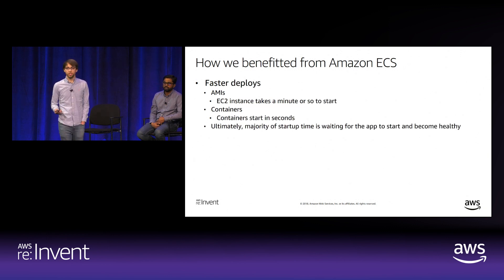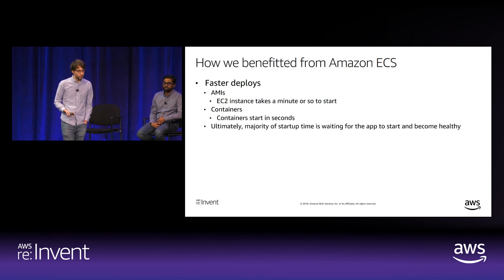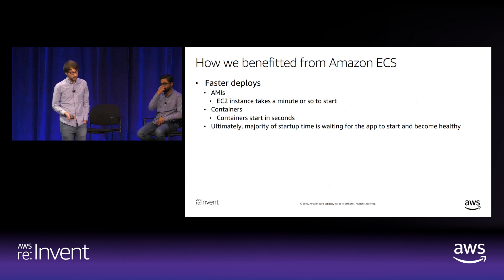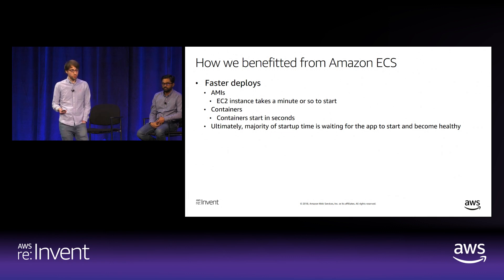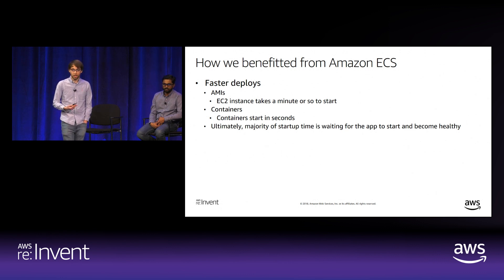Deploys were also faster. When deploying to Amazon EC2 with an AMI, instances typically take a minute or so to start up. When deploying a container to ECS with the EC2 launch type, containers start up in seconds. The majority of the time spent deploying is now waiting for the application to start and become healthy—something we can optimize and have control over.